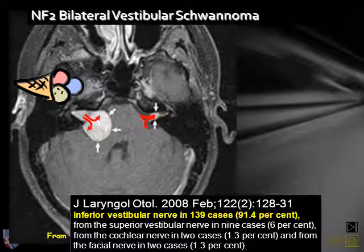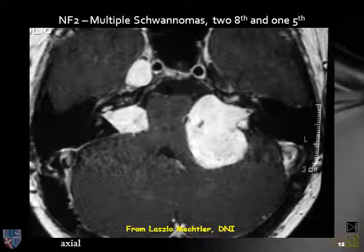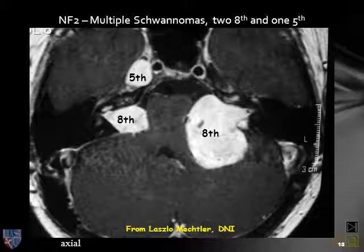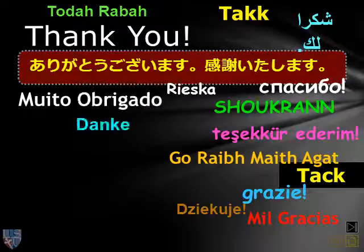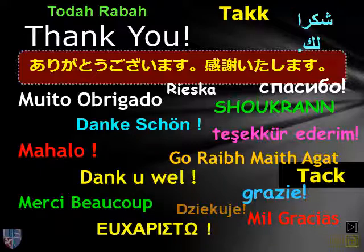A patient with bilateral cerebellopontine angle masses and bilateral involvement of the internal auditory canals has neurofibromatosis type 2. A second patient with NF2 demonstrates not only bilateral cerebellopontine angle masses, but also an enhancing tumor in the cavernous sinus, which was a schwannoma of the trigeminal nerve. This has been a short discussion of the cerebellopontine angle mass and its differential diagnosis.